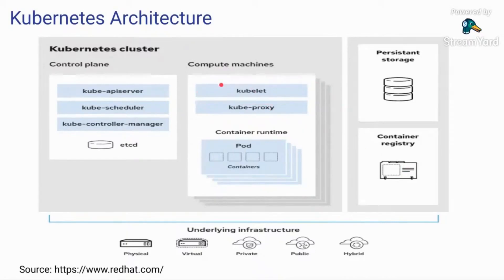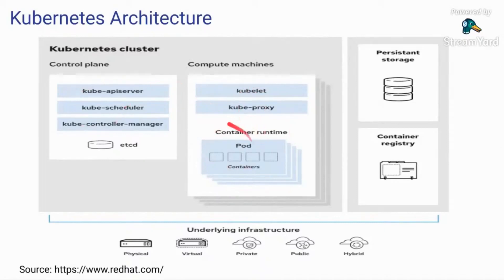Another important process in the compute machine is Kubelet. Each node contains a Kubelet — a tiny application that communicates with the control plane. The Kubelet makes sure that containers are running. If something goes down, the Kubelet inspects the control plane to schedule it on a different node altogether, so it is monitoring your containers within that node. When the control plane needs something done on an individual node, it communicates with the Kubelet to execute those commands.